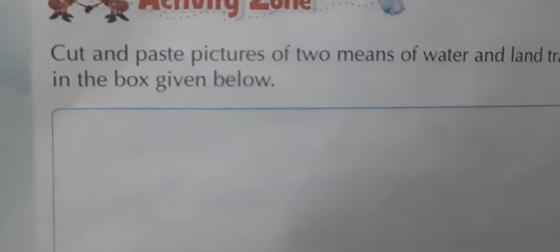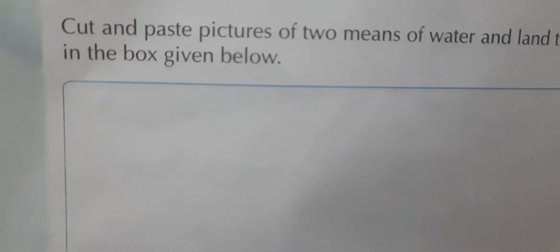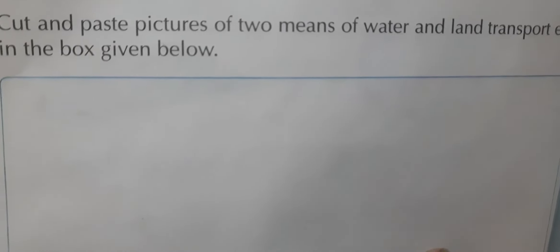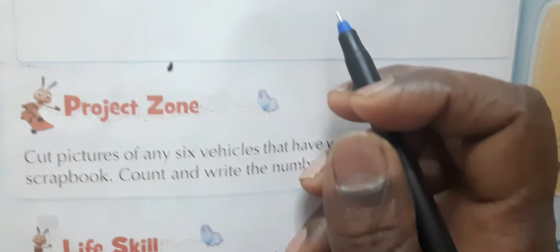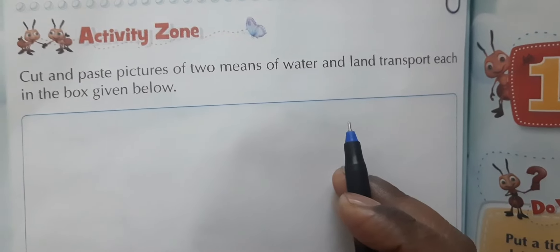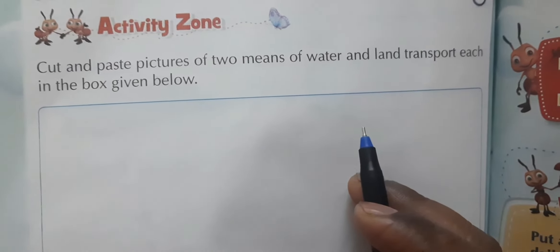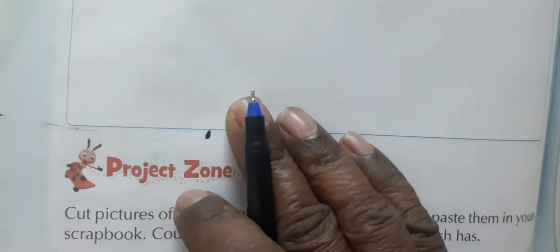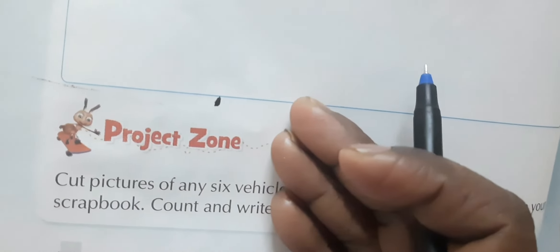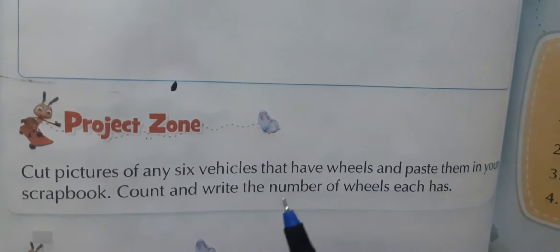Here is an activity zone: cut and paste pictures of two means of water transport and two means of land transport each in the boxes given below. For water transport you can use sailboat, ship, or speed boat. For land transport you can use car, bus, scooter, or motorbike — paste any two of each.